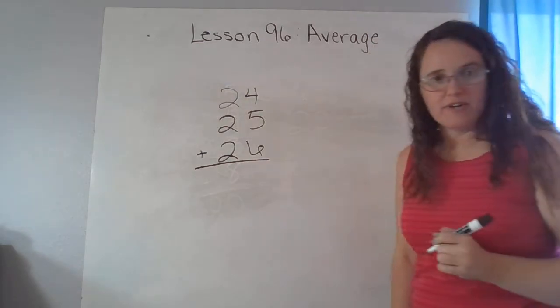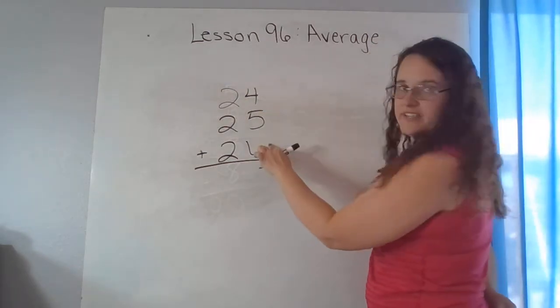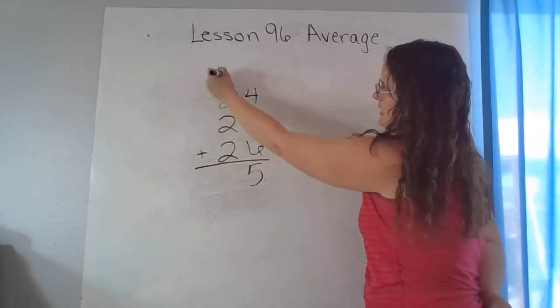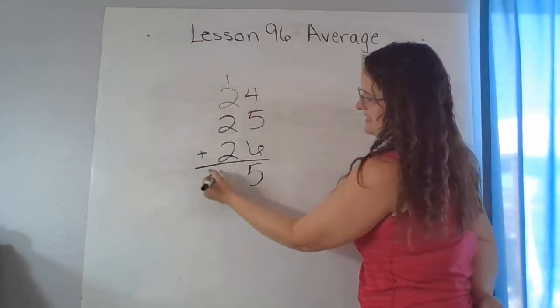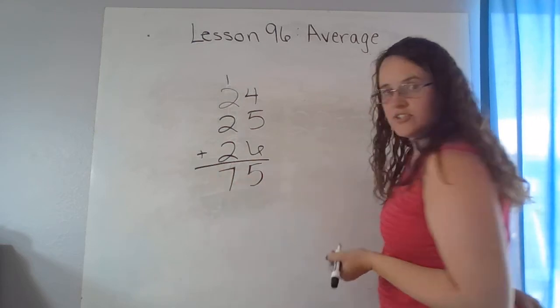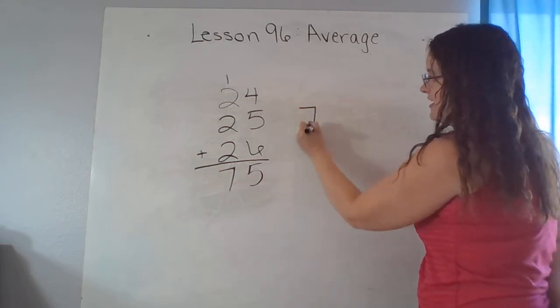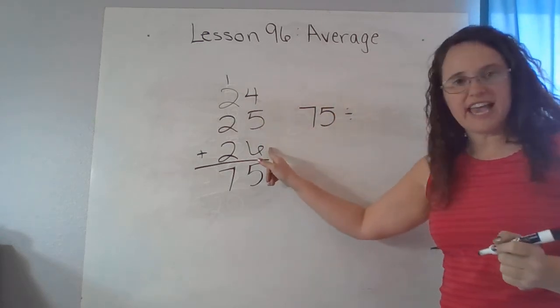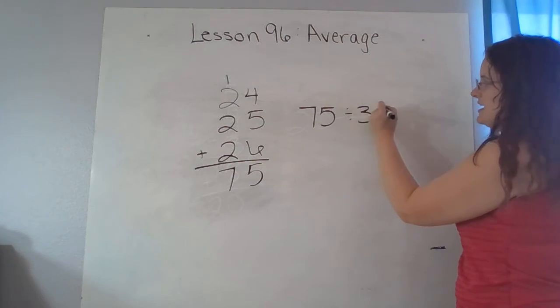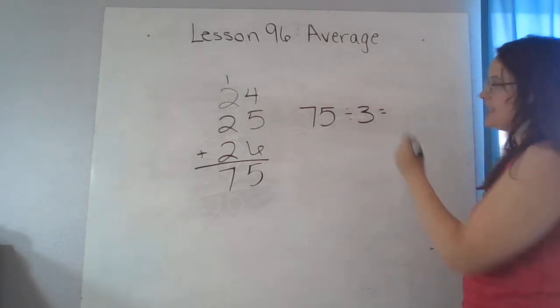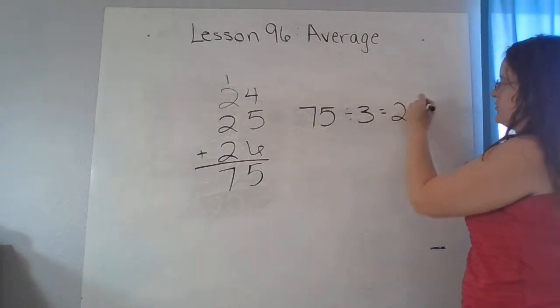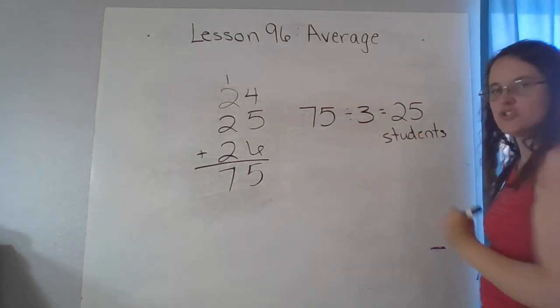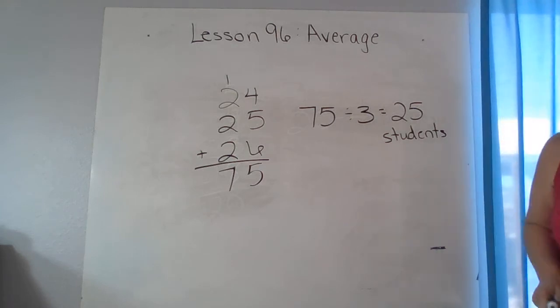So I'm going to add the three numbers together first. 4 and 6 is 10. 10 plus 5 is 15. Carry my 1, 2, 4, 6, 6 plus 1 is 7. So I have 75. And then I need to divide by however many numbers I added, which was 3. And 75 divided by 3 is 25 students.